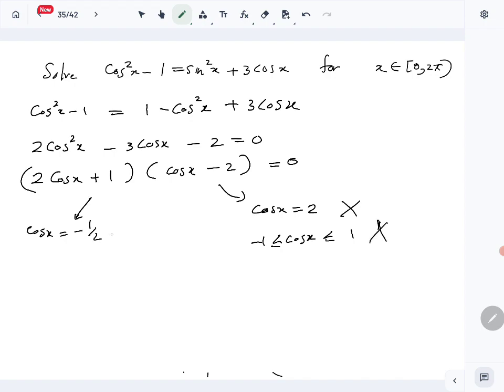From this part, cos x equals minus 1/2, so x equals 2π/3. That is the general solution, where n belongs to Z. But we want the solutions in 0 to 2π, so then the only two solutions we get is 2π/3 and 4π/3.